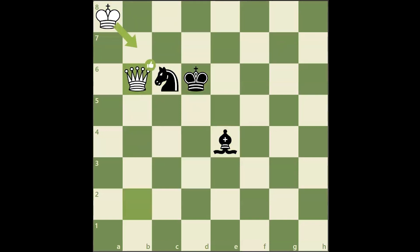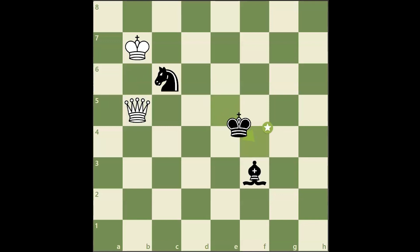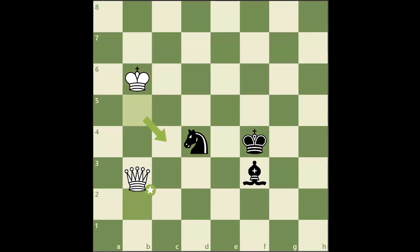The second step is to approach the pieces with your king. To overcome any barrier black may try to set up, queen checks to decoy the pieces to worse positions are very important.